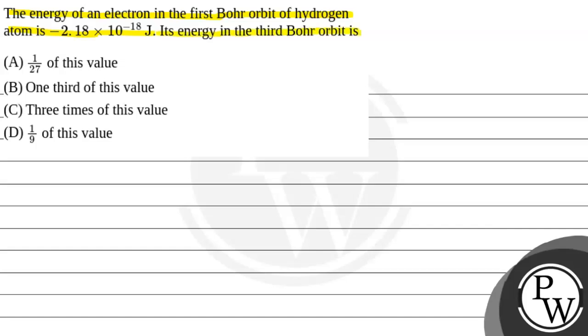Its energy in the third orbit is - and from the given options we can see a comparison is given for how many times this value of -2.18 × 10^-18 joules the third Bohr orbit energy will be. So first, we'll look at the concept for this question.